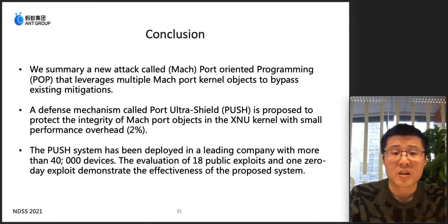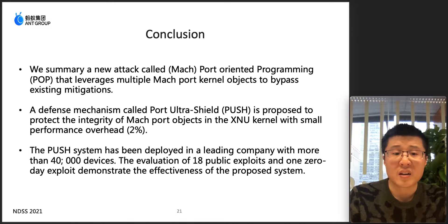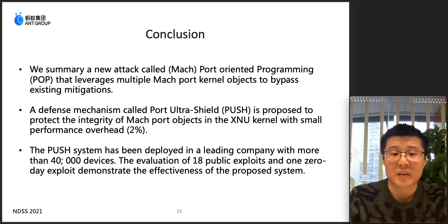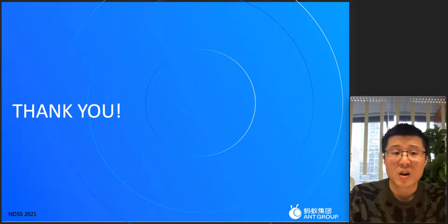In conclusion: first, we summarize a new attack called POP that leverages multiple Mach port kernel objects to bypass existing mitigations. Second, a defense mechanism called PUSH is proposed to protect the integrity of Mach port objects in the XNU kernel with small performance overhead. Third, the PUSH system has been deployed in a leading company, and evaluation on public exploits and one zero-day exploit demonstrates the effectiveness of our proposed system. That's all for my presentation. Thank you for listening.